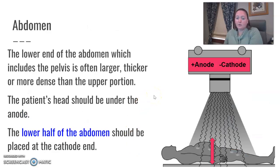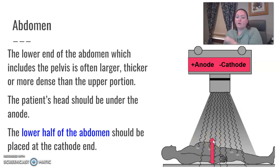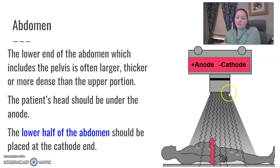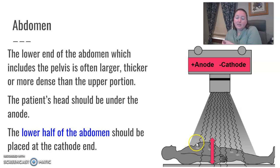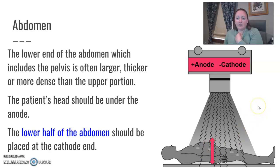The abdomen is our easiest example. The upper portion of the abdomen tends to be not as dense or thick as the lower portion. The fat or the bony pelvis area at the lower section of the abdomen is thicker, so that part goes under the cathode end because it's more intense. If you're taking an abdomen x-ray, compare the upper part where the lungs are and we have a little bit of ribs versus the lower part where we have the pelvis and bony areas — that will be the thicker part, and we'd put that under the cathode.